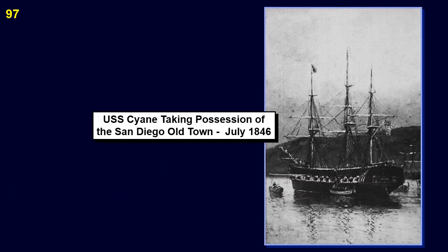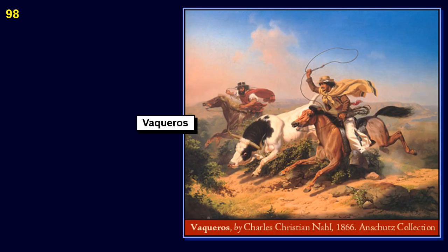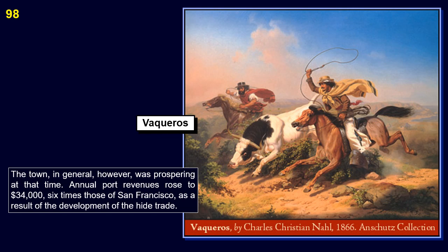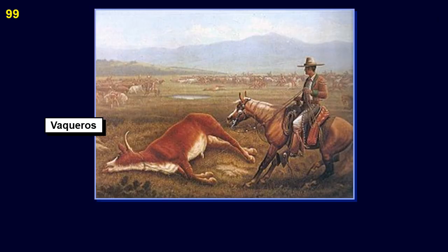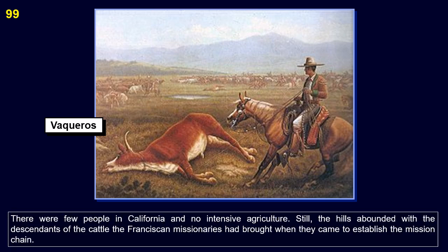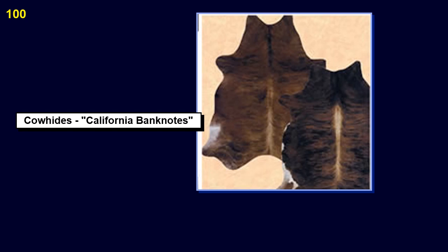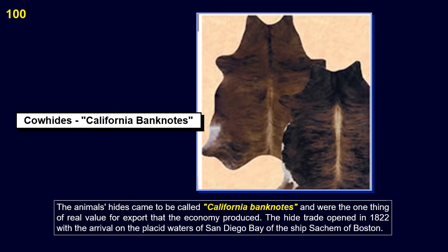This shows the USS Cyane taking possession of the San Diego Old Town in July of 1846. The town, in general, however, was prospering at that time. Annual port revenues rose to $34,000 — six times those of San Francisco — as a result of the development of the hide trade. There were few people in California and no intensive agriculture. Still, the hills abounded with the descendants of the cattle the Franciscan missionaries had brought when they came to establish the mission chain. The animals' hides came to be called California banknotes and were the one thing of real value for export that the economy produced.